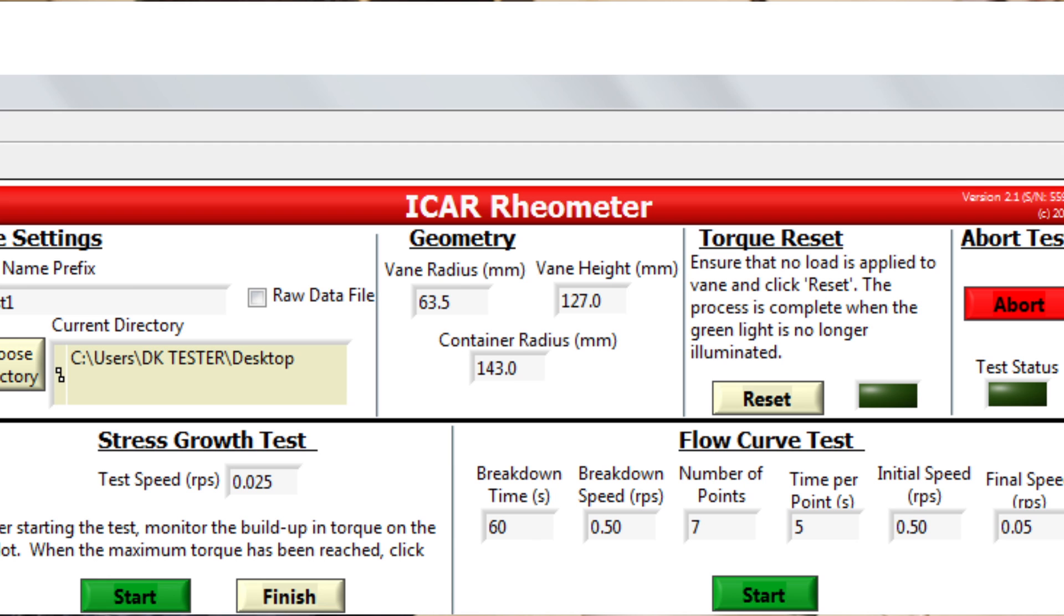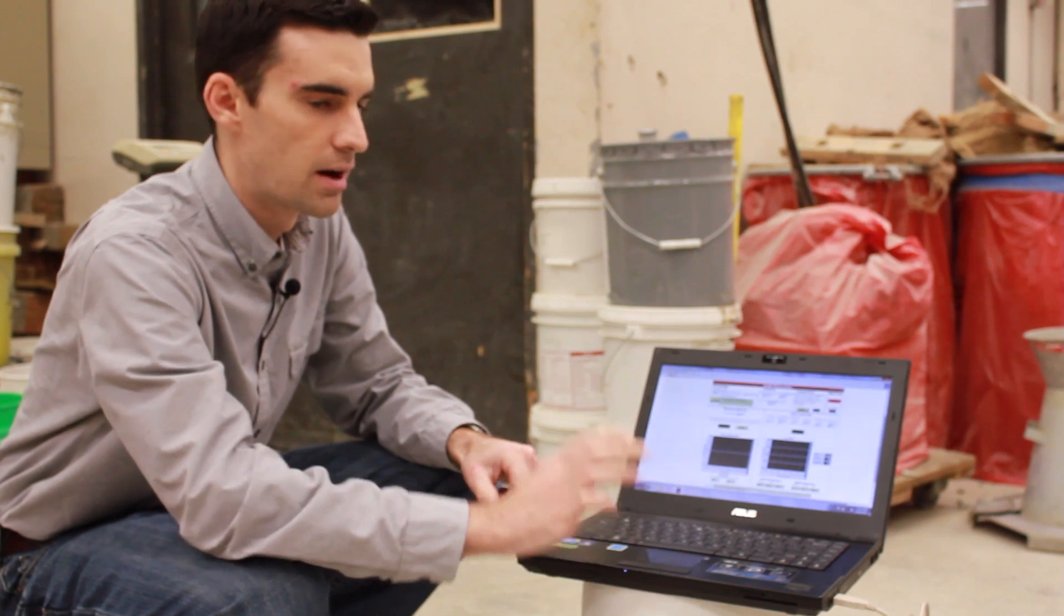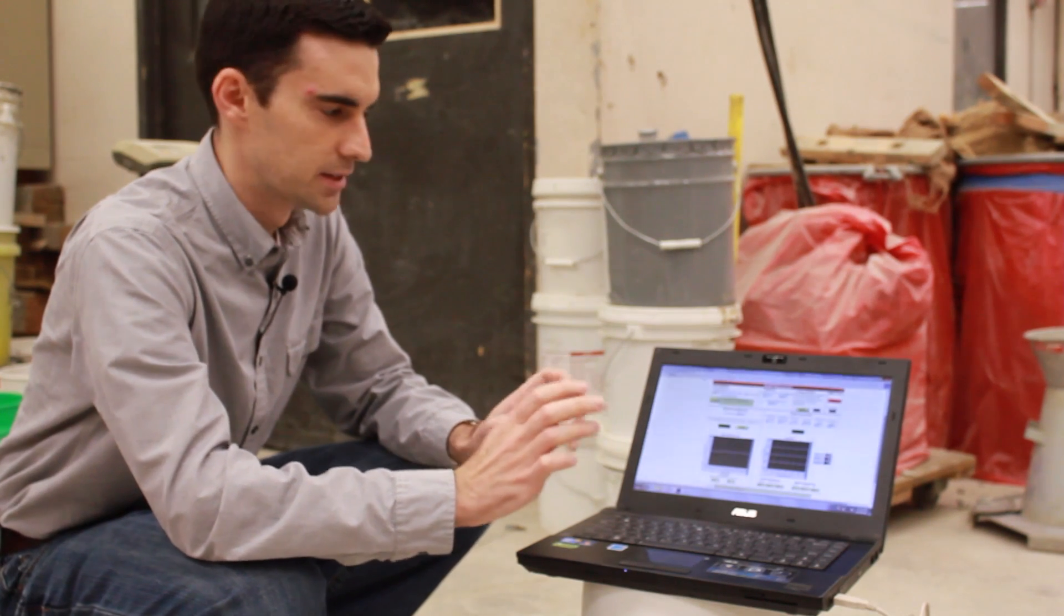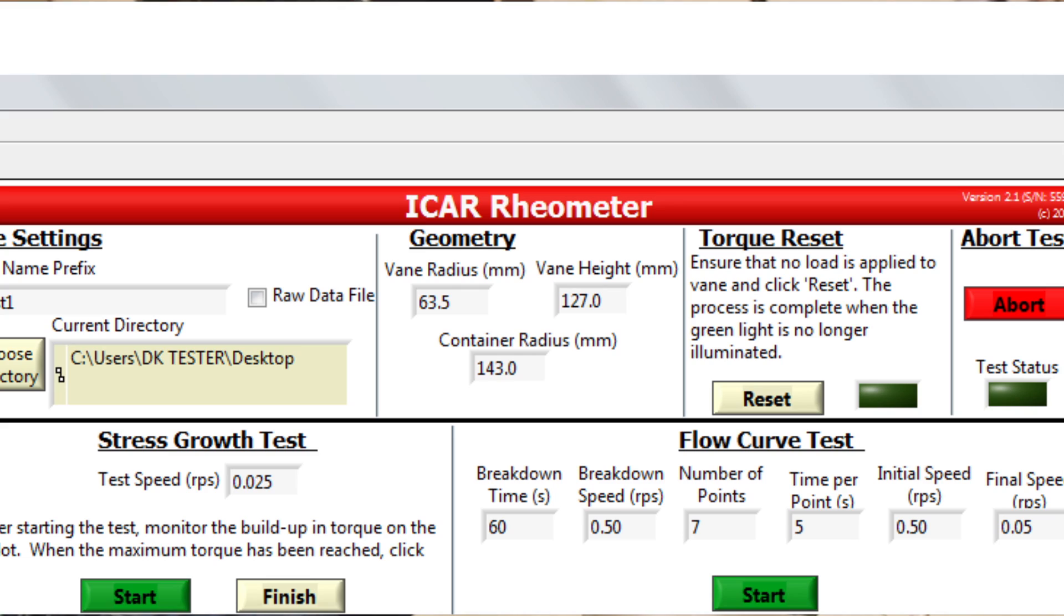The next box is the geometry. When we open up the software, the values in these fields are already preset to the most common size. The only size we need to change would be the radius of the container. We vary the container radius based on the maximum aggregate size.